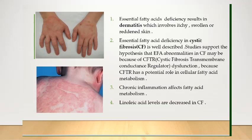Essential fatty acid deficiency in cystic fibrosis is well described. In cystic fibrosis, CFTR dysfunction occurs. CFTR — cystic fibrosis transmembrane conductance regulator — is a membrane protein and a chloride channel in vertebrates that is encoded by the CFTR gene. This dysfunction of CFTR is because of essential fatty acid deficiency. Chronic inflammation affects fatty acid metabolism, and linoleic acid levels are decreased in cystic fibrosis.